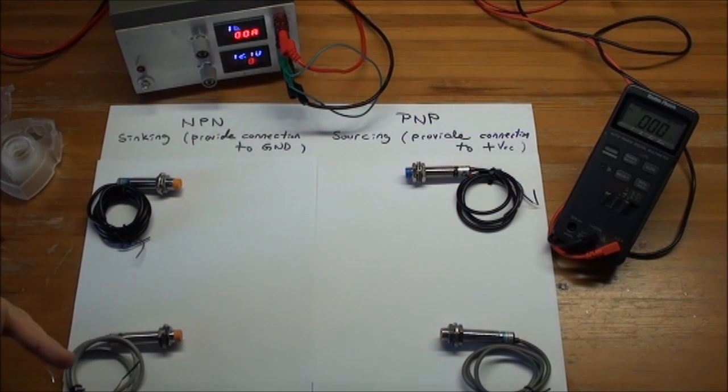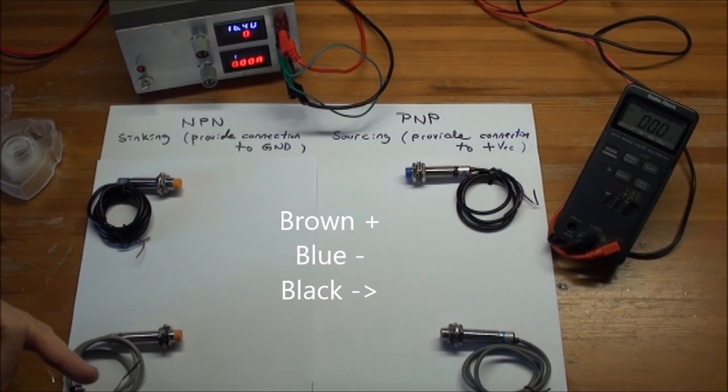The brown, the black, and the blue, and they're all used for the same. So the brown is plus, and the blue is minus, and the black is the signal out.